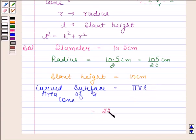π is equal to 22 by 7. R is equal to 10.5 by 2 cm. L is equal to 10 cm.